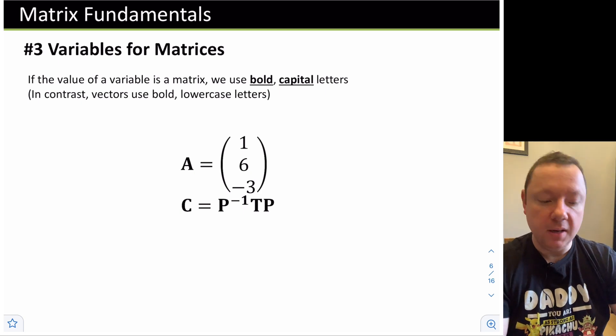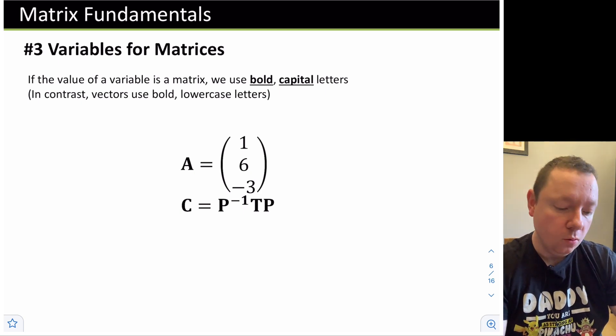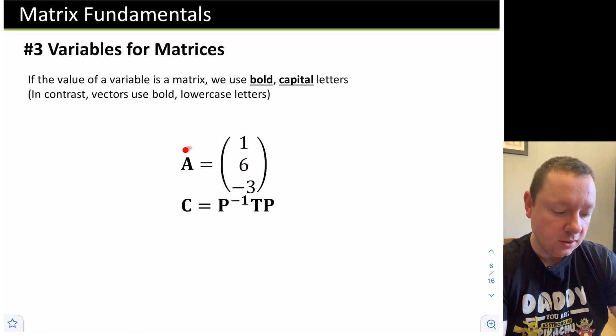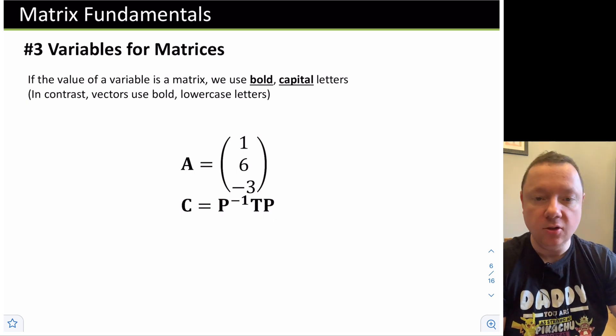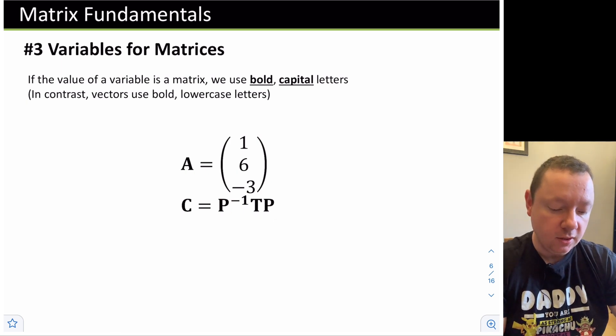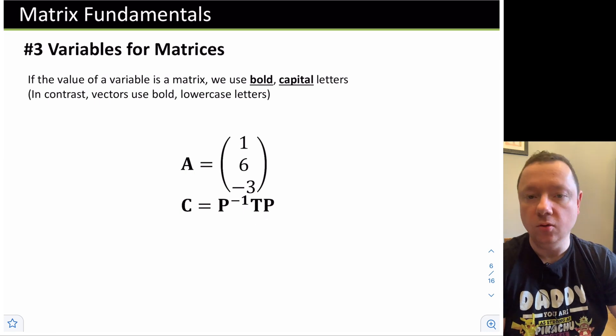How we denote matrices in maths: we use capital bold letters to denote a matrix. For instance, this matrix A equals 1, 6, -3. Notice it's a capital bold A. Another matrix we could represent C, equal in some other matrix, the inverse of P times T, P. C would be a matrix, the inverse of P is a matrix, and T and P are also matrices.